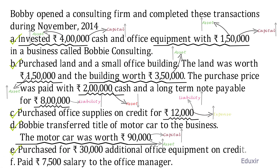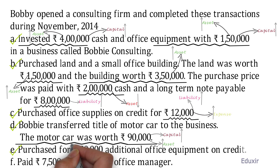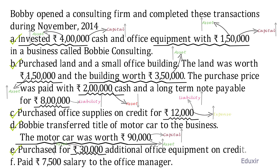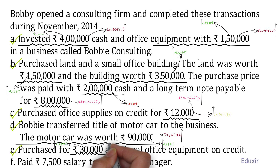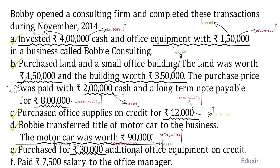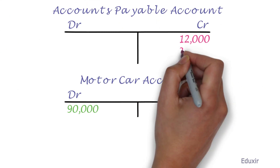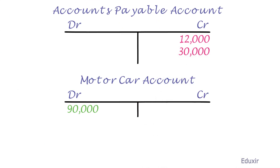Let us now deal with transaction E. In this transaction, 30,000 rupees worth of assets are purchased on credit, increasing the office equipment asset. The rule to record an increase in the asset is to debit the corresponding asset account, so we debit the office equipment account with 30,000 rupees. As this asset is purchased on credit, the business is creating a liability. The rule to record an increase in liability is to credit the corresponding liabilities account — in this case, accounts payable. We credit the accounts payable account with 30,000 rupees. That covers transaction E.